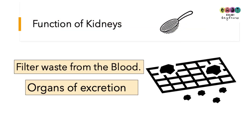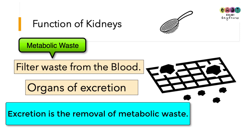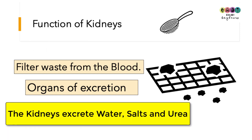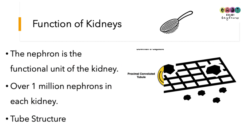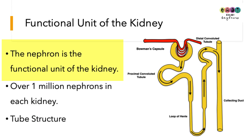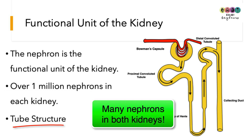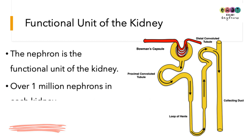The kidneys are organs of excretion — their function is to filter metabolic waste from the blood. The kidneys excrete water, salts, and urea, collectively known as urine. Each kidney contains structures known as nephrons, described as the functional unit of the kidney. There are over one million nephrons in each kidney, and they are tube-like structures.